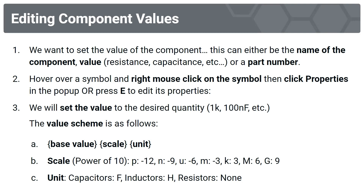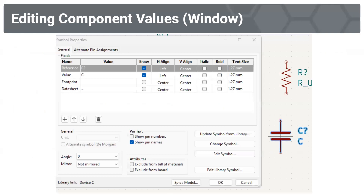Units are F for capacitors, H for inductors, and none for resistors in KiCAD. This is what the window looks like when editing component values — we're only concerned with the value field. We're going to be changing those values now.